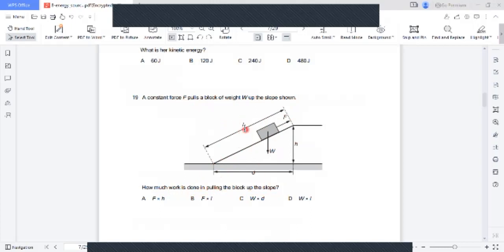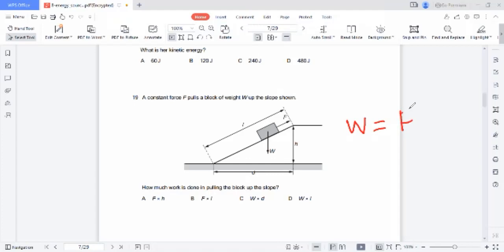Length is distance L. Work done is force into distance. Force is F and distance is L. So this is the correct option.